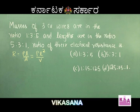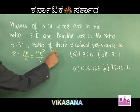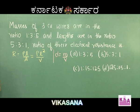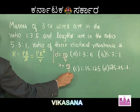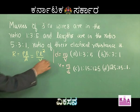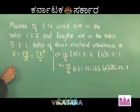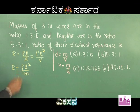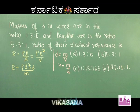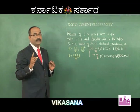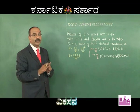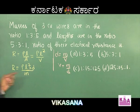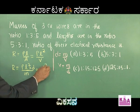Density D is given by mass per volume, so volume = mass/density. Using this, R = ρL² divided by V, and substituting V = M/D, we get R = ρL²D/M. For a given material, density and resistivity are fixed. Therefore, R is proportional to L²/M.